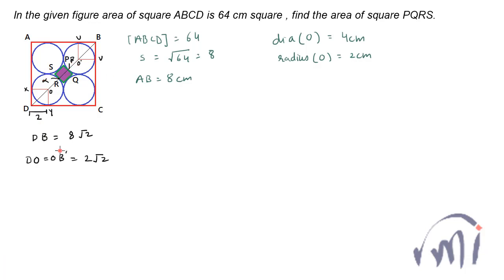The length alpha beta will actually be equal to the side of the square PQRS. Let me call it SP, it is parallel to SP also. And this will actually be equal to DB minus DO, and since DO and O prime B are equal, I will write 2 times DO minus O prime alpha and minus O prime beta.